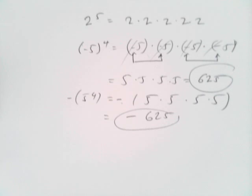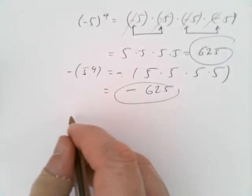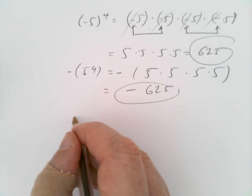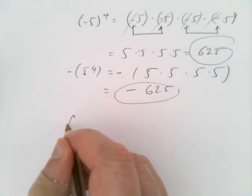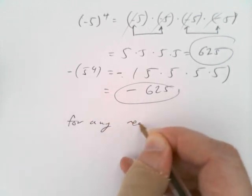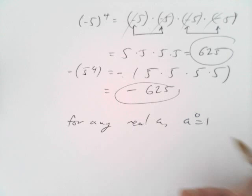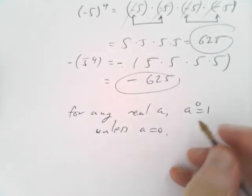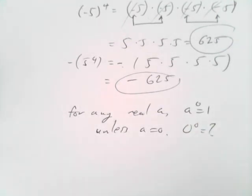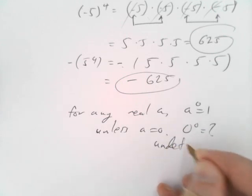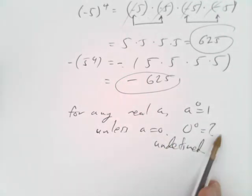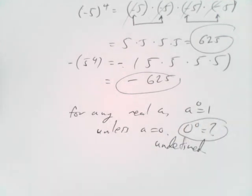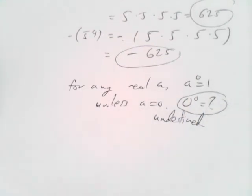The first tricky case we want to think about is the zeroth power. For any real number a, a to the zero is one — unless there's one special case: a is zero. Zero to the zero — what does that mean? We'll leave that as undefined; there's no meaning to that expression. We won't allow zero to the zero as a meaningful expression in mathematics. We'll run into this problem again later.